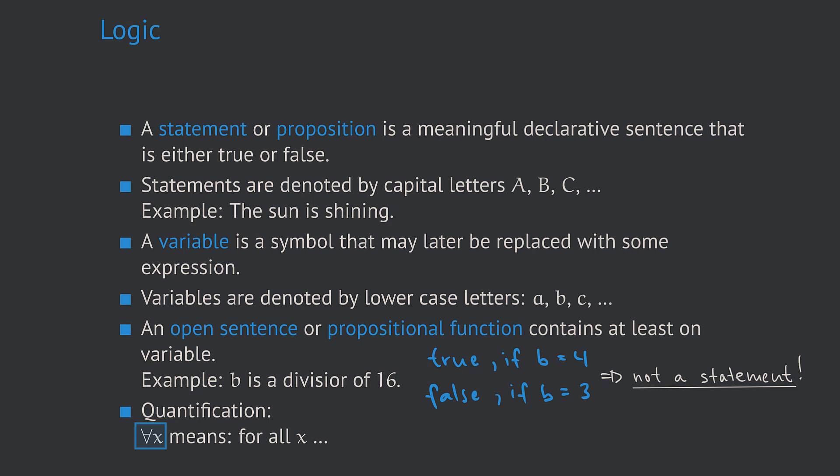And there is a second way to quantify an open sentence. It is by saying there exists at least one value of the variable such that the sentence containing the variable is true. The way to quickly write this is the so-called existential quantifier, which looks like a capital E flipped around horizontally. It is to be read as 'there exists at least one x.'